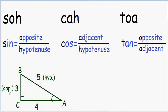Lastly, we need to label the adjacent side. The adjacent side is always touching the angle but not the hypotenuse. This side is touching angle A but it's not the hypotenuse, so that's our adjacent side. The side with a length of 4 is going to be our adjacent side, and I'm going to label it with ADJ.